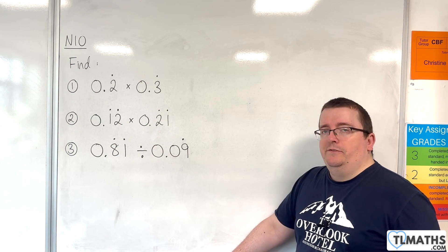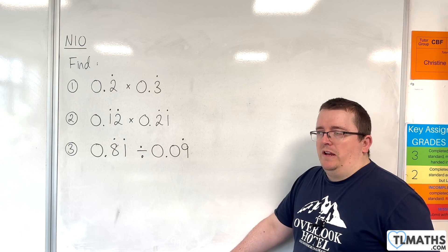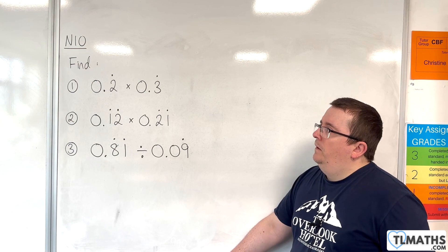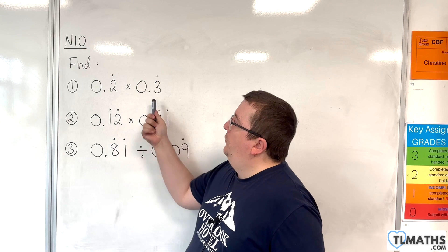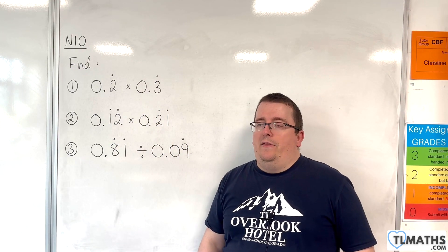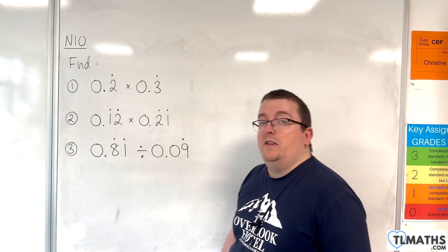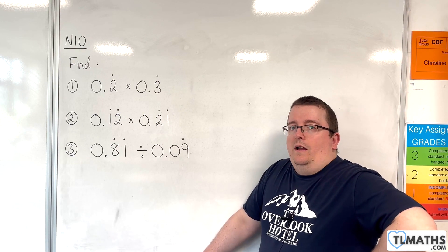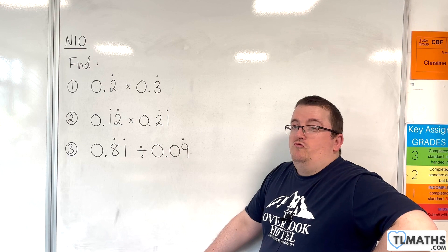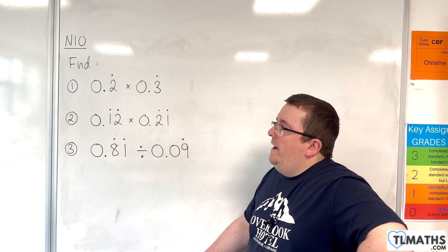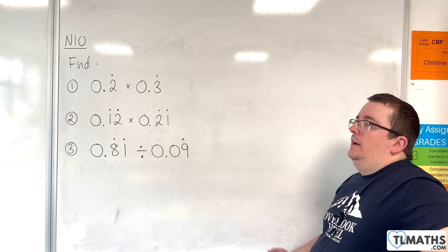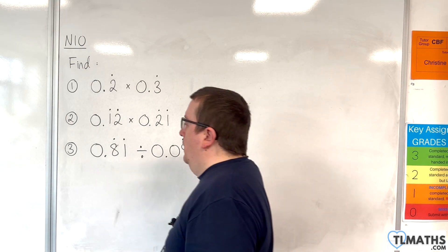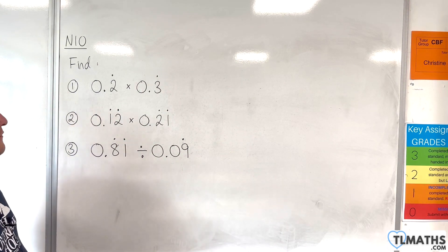When we're multiplying and dividing, I would not recommend doing this by long multiplication, long division, or short division. We could start off by doing 0.2 times 0.3, then 0.22 times 0.33, then 0.222 times 0.333 and try to see if a pattern emerges, but that seems really cumbersome. Instead, converting to fractions and then back to a decimal will be a lot easier, and that's the way I would definitely recommend.